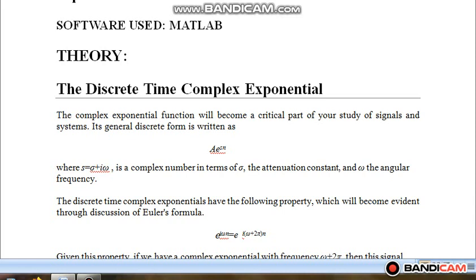This s can be real only or it can be imaginary also. Here I am writing s as sigma plus j omega because I want to plot both real and complex exponential here. So, e raised to power j omega n is expressed as e raised to power j omega plus 2 pi n. This expression signifies that when we are using complex exponential, this complex exponential is periodic because it repeats itself after a period of 2 pi.